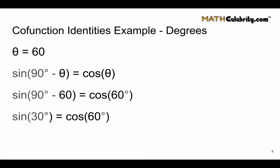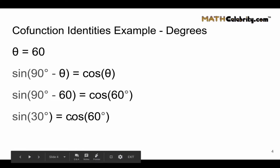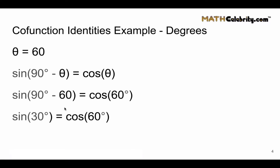Now I'm going to walk you through an example in degrees. Let's take theta equals 60 degrees and find the co-function of sine and cosine. Using our co-function identity, sine of 90 degrees minus theta equals cosine of theta. Plugging in theta equals 60, we get sine of 90 minus 60 equals cosine of 60, which simplifies to sine of 30 degrees equals cosine of 60.